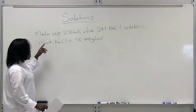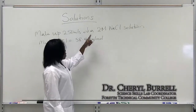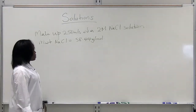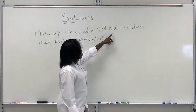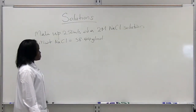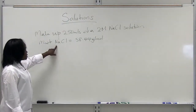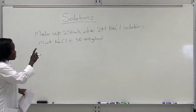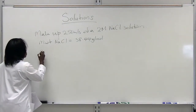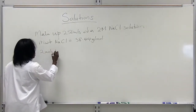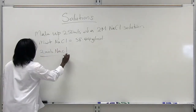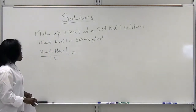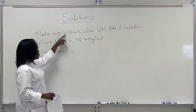What if you were asked to make up 250 mL of a 2 molar sodium chloride solution? What you would have to do here is first determine how many moles of sodium chloride you will need in your 250 mL of solution. We know the molecular weight of sodium chloride, which is 58.44 grams per mole. 2 molar NaCl basically means 2 moles of sodium chloride in 1 liter of solution. Now we need to determine how many moles of sodium chloride would be present in 250 mL of solution.